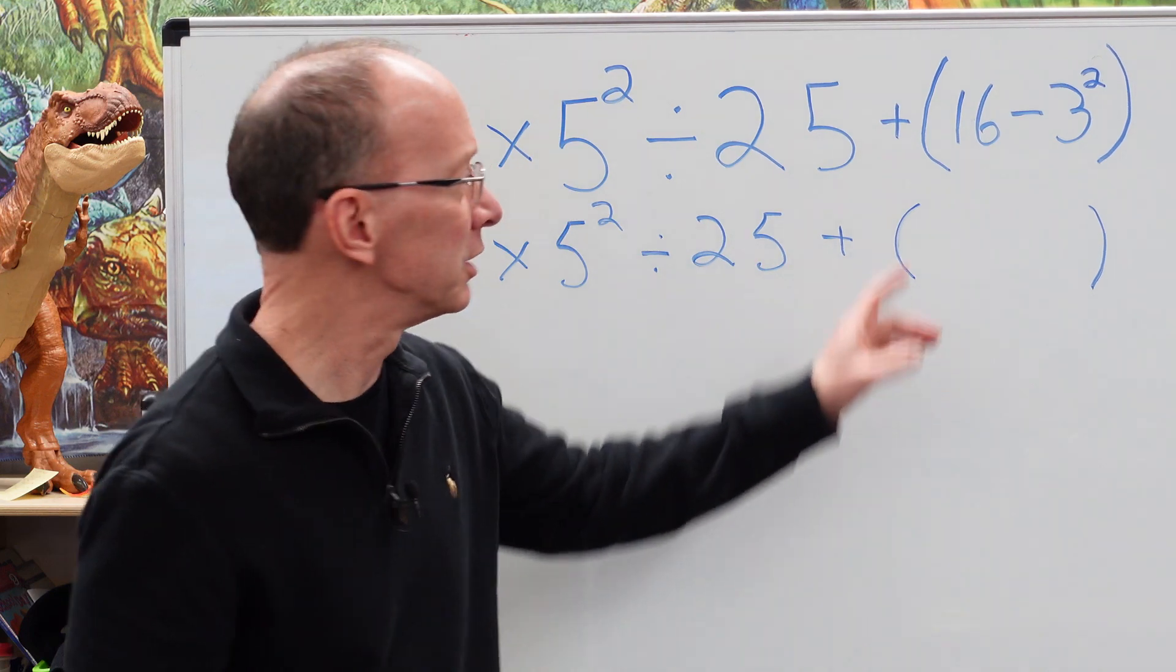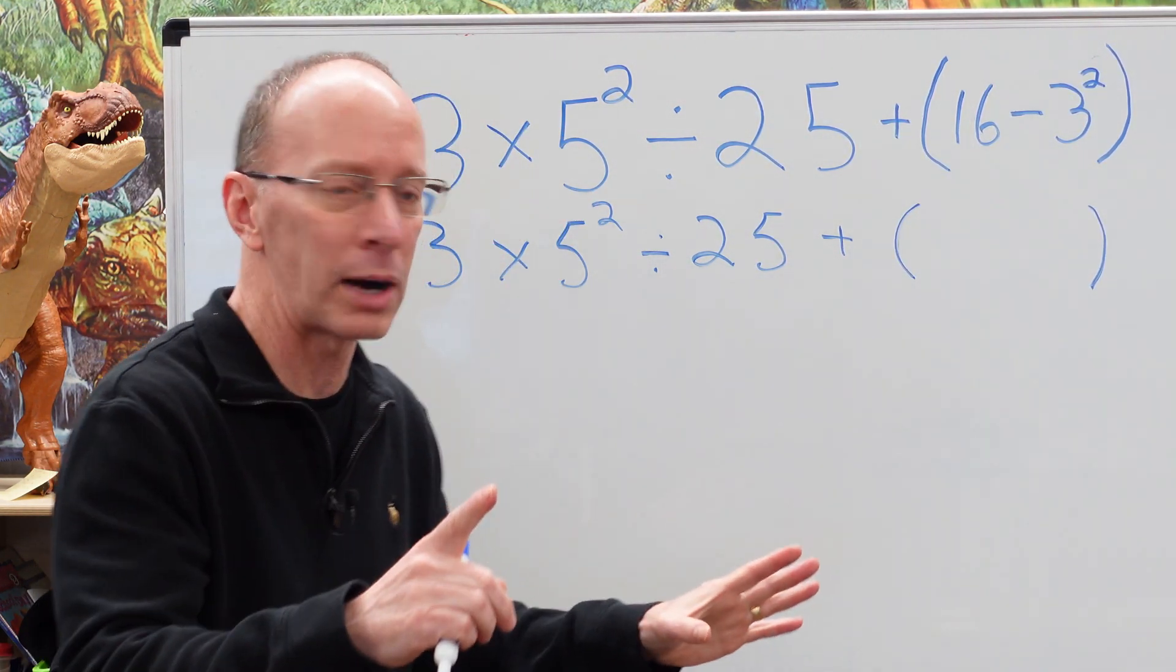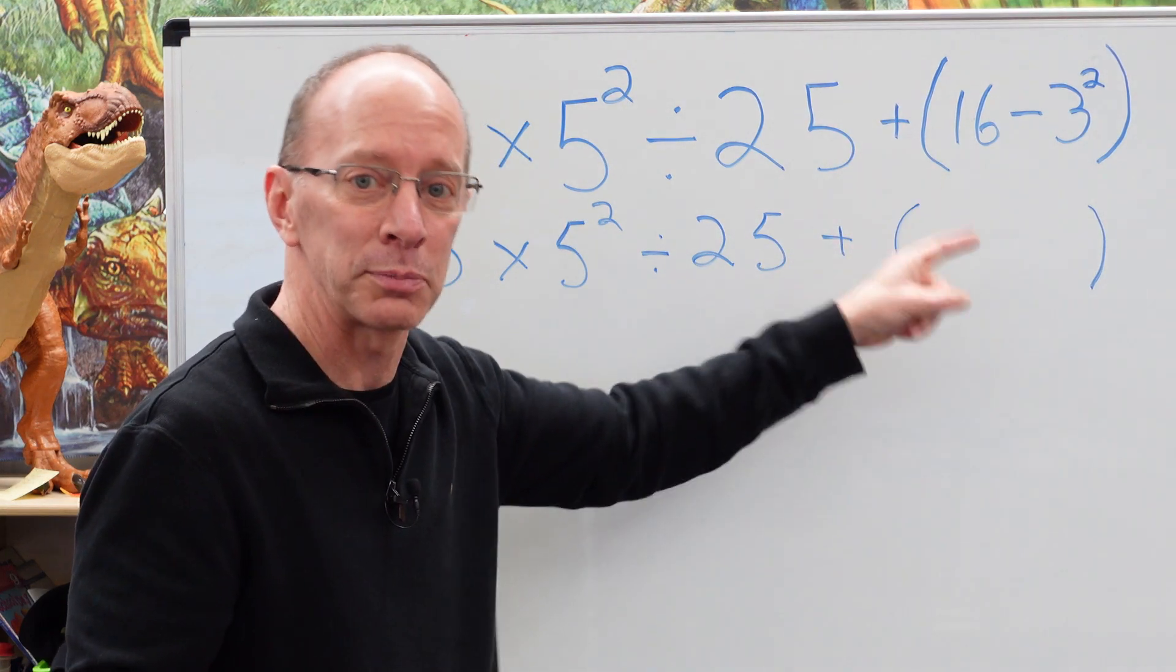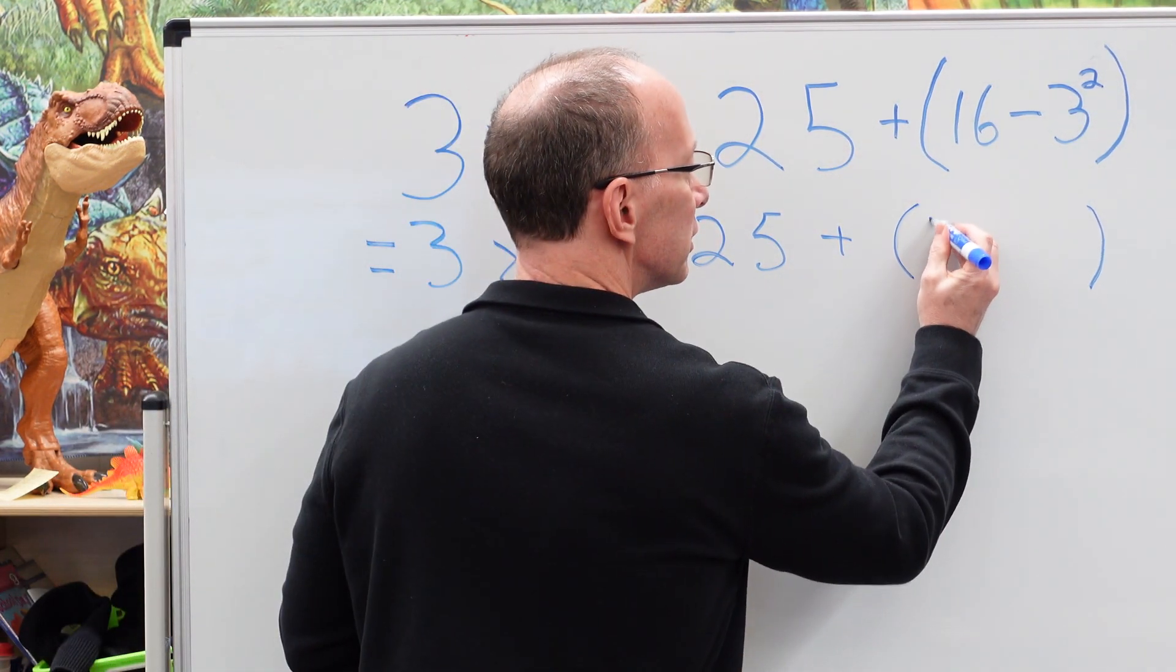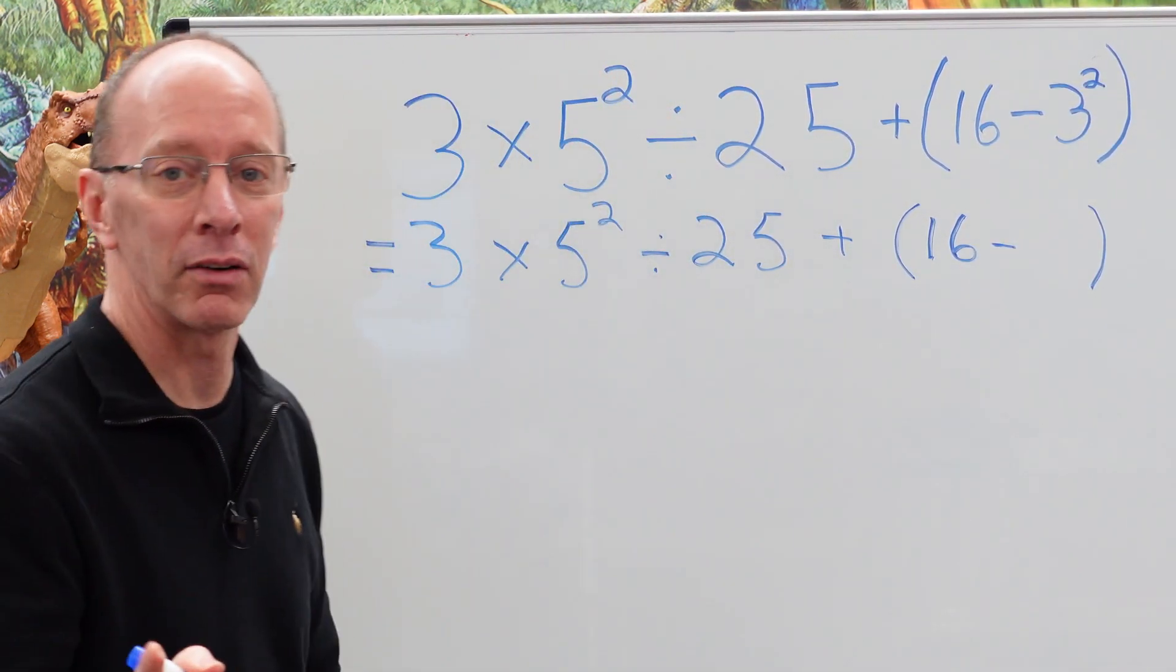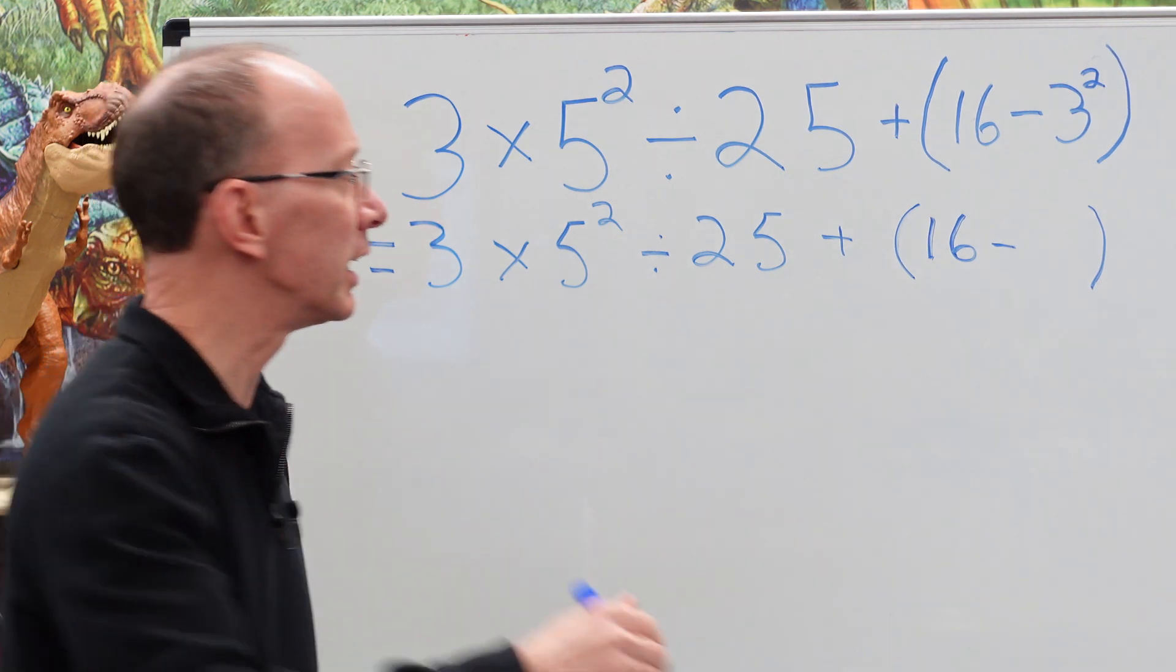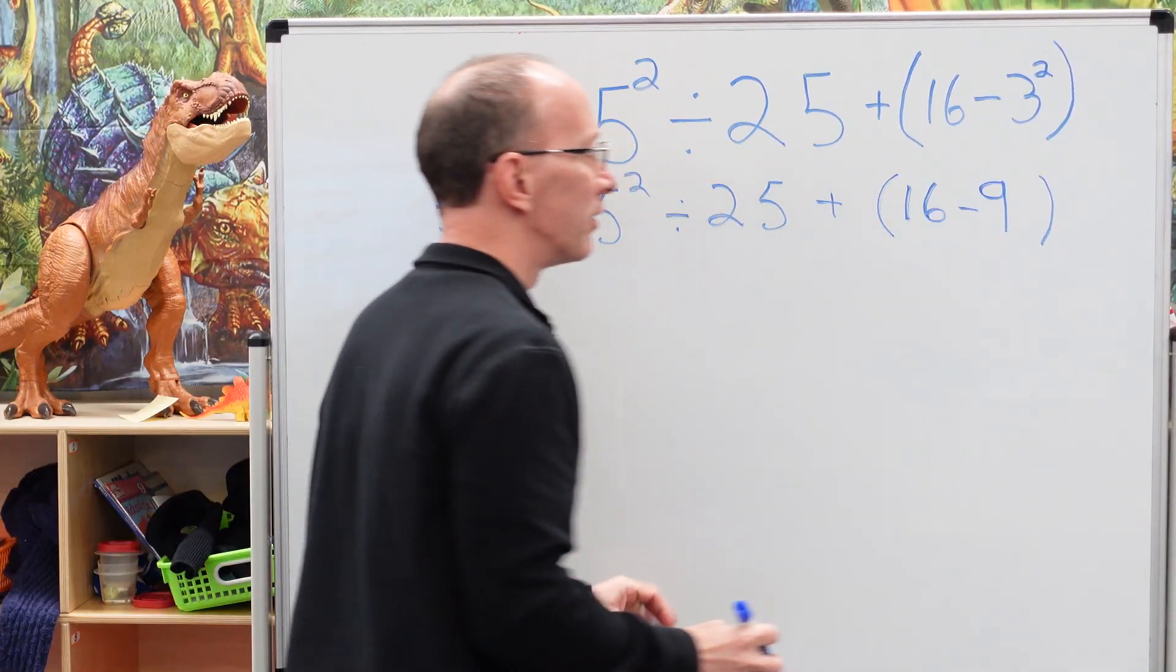Now, the first reaction when you see that is like, yeah, let's do 16 minus 3. No, no, no, no, no. Remember, order of operation. We need to do the exponent right now. We need to do that first. So we go ahead and do 16 minus 3 to the second power. 3 times 3? 9. So we put 9 right there.